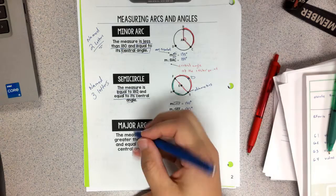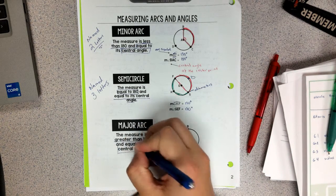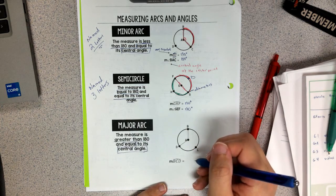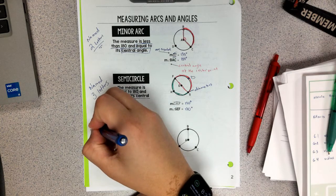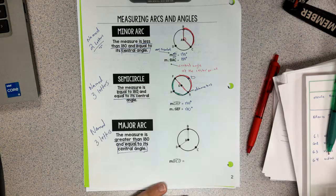The major arc is greater than 180, and it is also equal to its central angle. It's also named with three letters. So both semicircle and major arc are named by three letters.